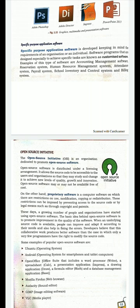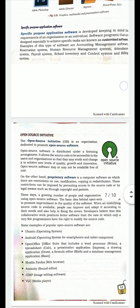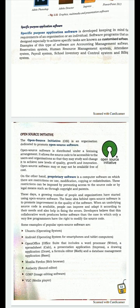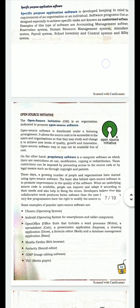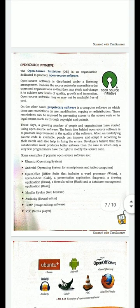Specific purpose application software is a special type of software designed to perform a specific task in the computer. Examples include accounting management software, reservation system, human resource management system, attendance system, payroll system, school inventory and control system, and building management system. These are examples of specific purpose application software.